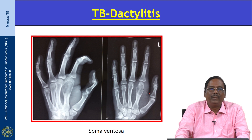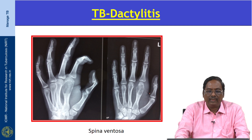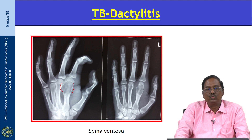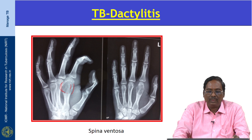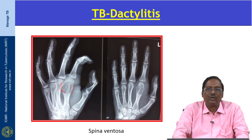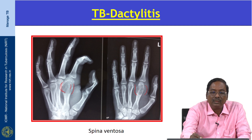This X-ray shows TB dactylitis, which is tuberculosis involvement of the short tubular bones of the hand and feet. It is more common in children. There is fusiform soft tissue swelling and periostitis. As the underlying bone is destroyed, a cyst-like cavity is formed and the remaining bone appears ballooned out. This appearance is termed spina ventosa — a globular soft tissue swelling with destruction of the periosteum.